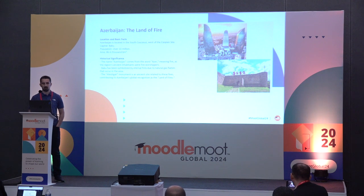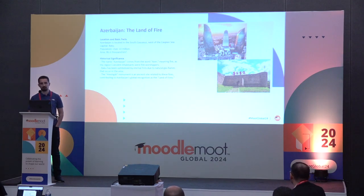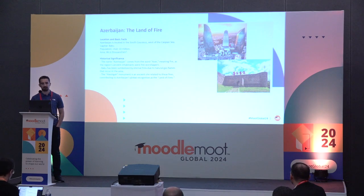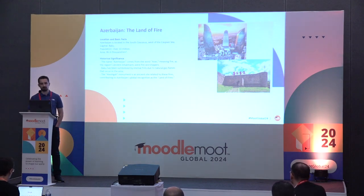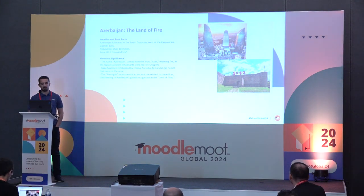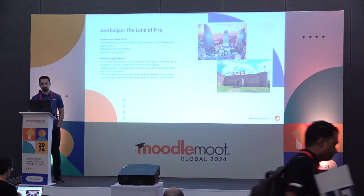Let's start with an introduction of our country. Azerbaijan is situated in the south of the Caucasus, west of the Caspian Sea. We have a population of over 10 million people, our capital city is Baku, and we have 86.6 thousand square kilometers of territory. The name Azerbaijan comes from the word Azer, which means fire. This name was used by fire worshippers — our ancient people were fire worshippers. Because of this, our country's name is related to fire.